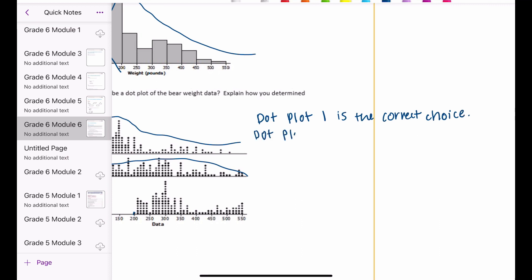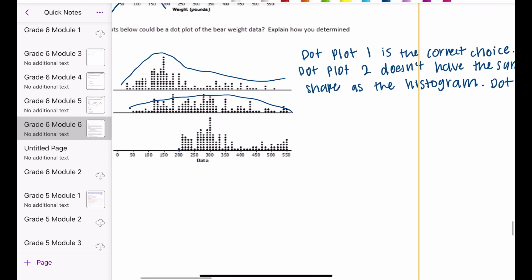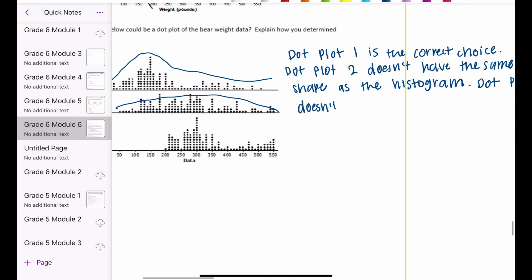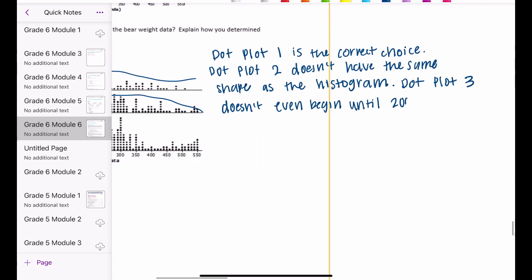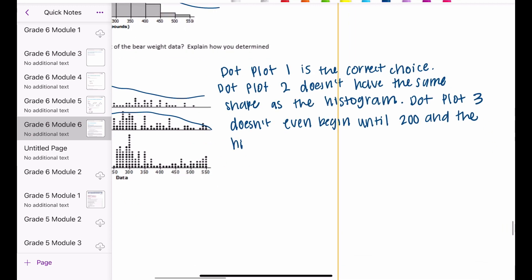Dot plot two doesn't have the same shape. Dot plot three doesn't start until 200, and the histogram has data from 0 to 200.